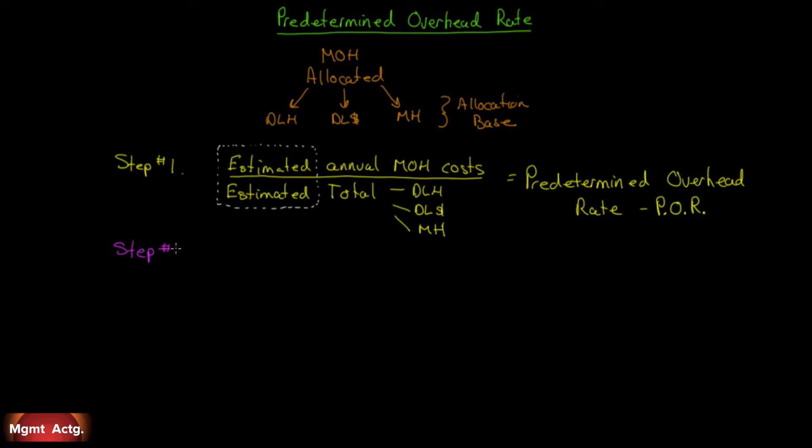Step number two: we take this predetermined overhead rate that we got by estimates, and we multiply it by the actual amount of hours or dollars or machine hours that we incur on a job. So if job one incurs 15 hours and we have a predetermined overhead rate of $12, we multiply 15 by 12, and that's what we apply to that job. We multiply the predetermined overhead rate by what we actually experience for the job, and that is the amount of overhead we apply to that job.